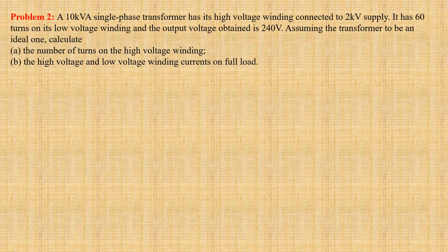Problem number 2. A 10 kVA single phase transformer has its high voltage winding connected to a 2 kilovolt supply. It has 60 turns on its low voltage winding and the output voltage obtained is 240 volts. Assuming the transformer to be an ideal one, we have to calculate the number of turns on the high voltage winding and the high voltage and low voltage winding currents on full load.